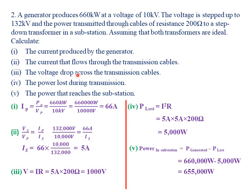For part (iii), we find the voltage drop across the transmission cables. Using Ohm's law, V equals IR. The current in the transmission cables is the secondary current of 5 amperes, multiplied by the resistance of 200 ohm, giving 1,000 volts as the voltage drop in the transmission cables.